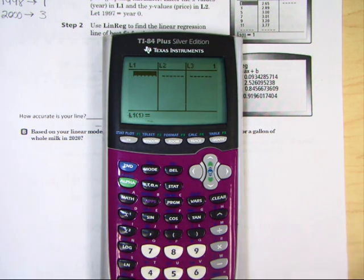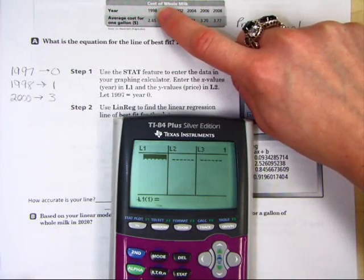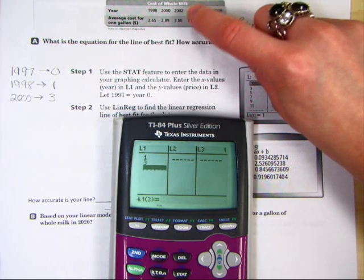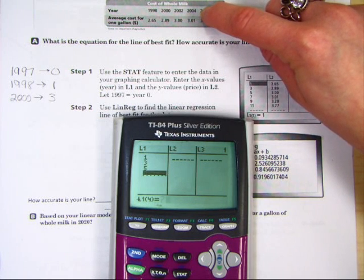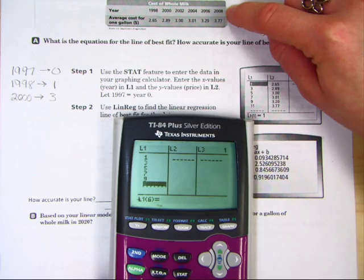Now what you're going to do is you're going to type in the values. So I'm going to go up to this chart and I'm going to type in my years. So 1998 is year one. 2000 is year three. 2002 is year five. 2004 is year seven. 2006 is year nine. 2008 is year 11.